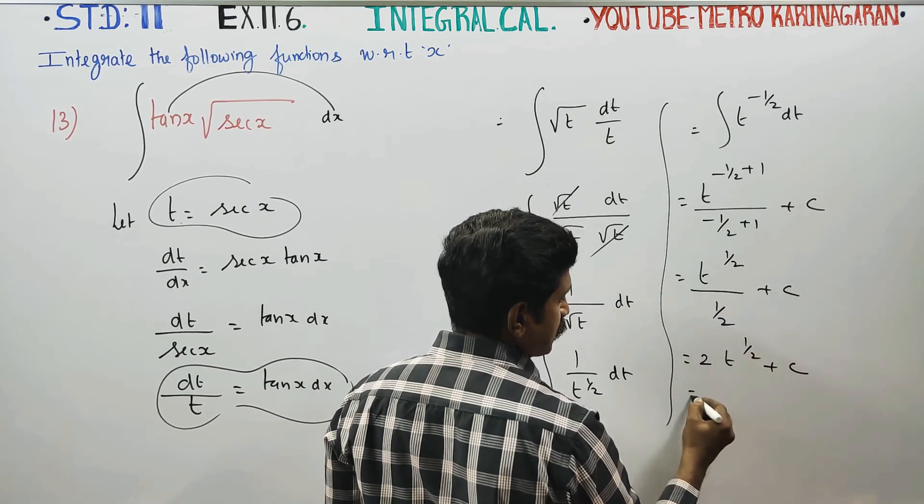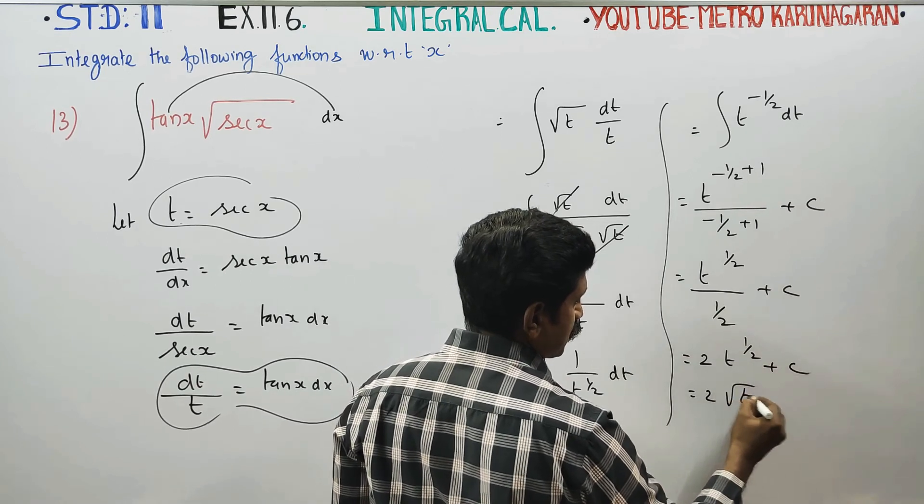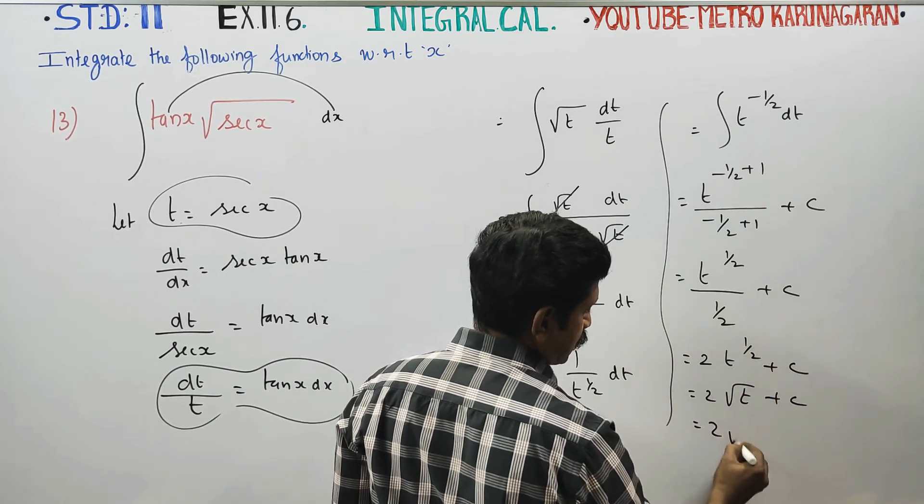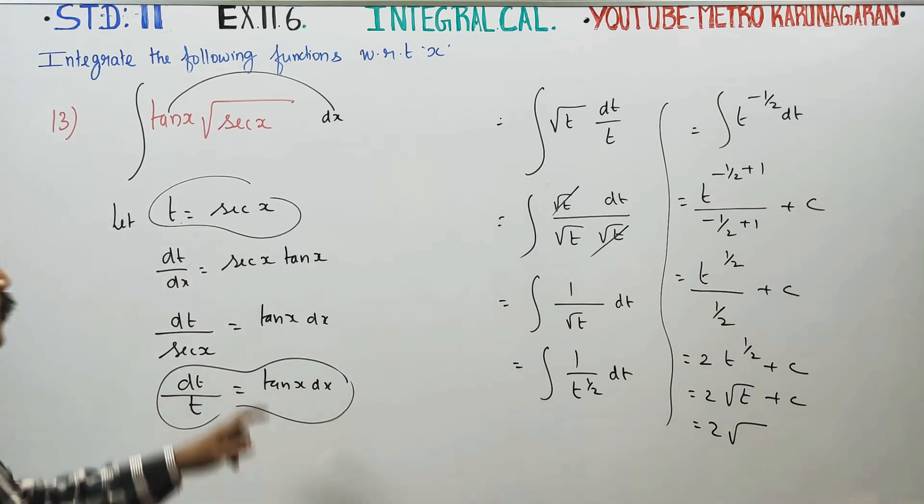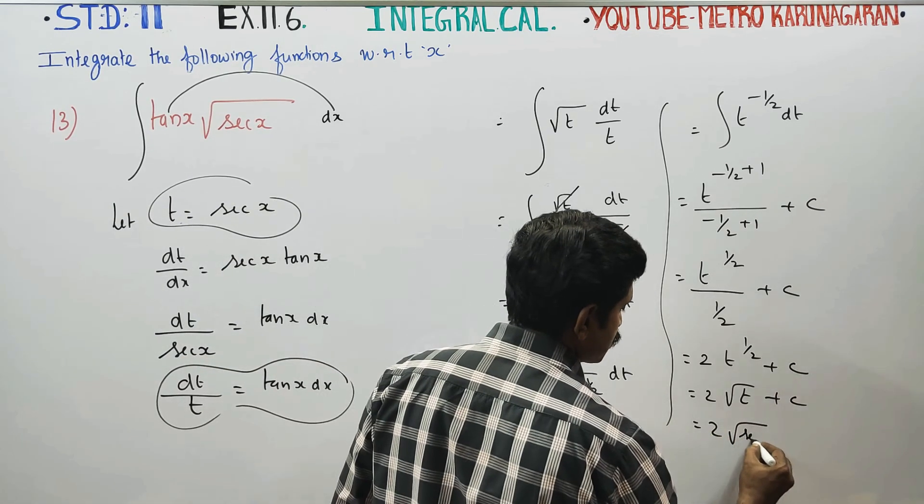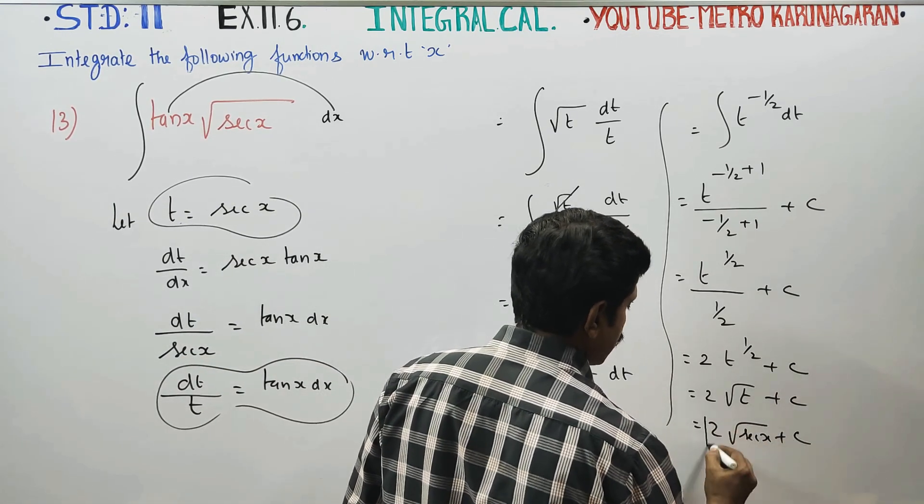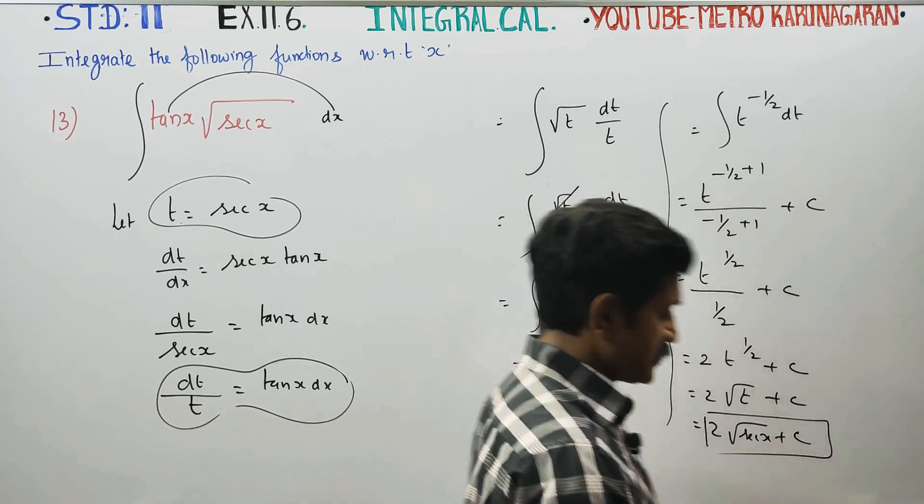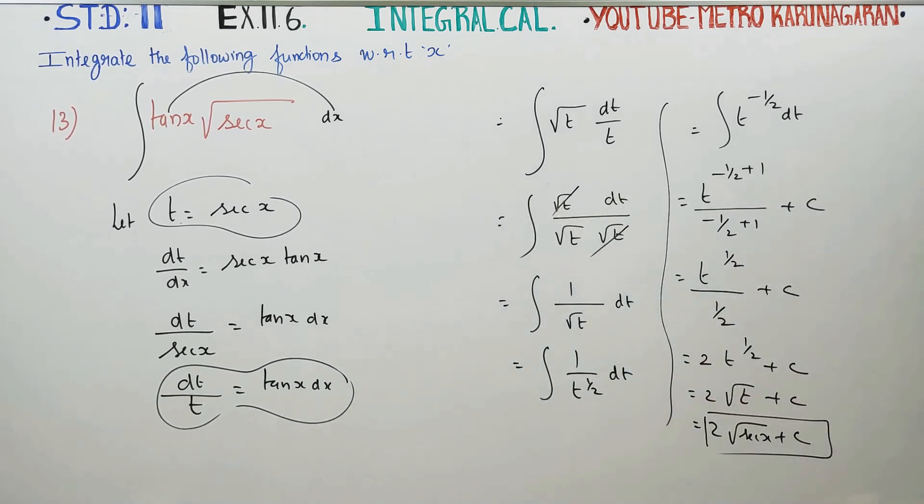1 by 2 becomes 2. This can be written as 2 root t plus c. t is secant x. Original substitute, therefore your answer will be 2 root secant x plus c is your final answer.